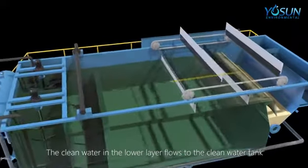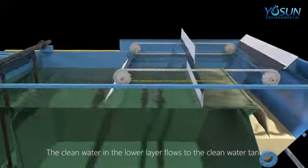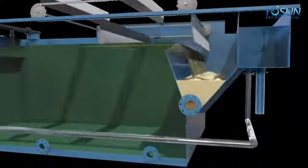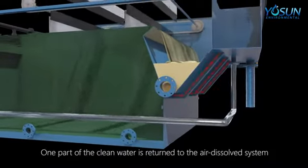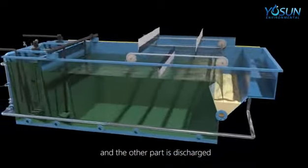The clean water in the lower layer flows to the clean water tank. One part of the clean water is returned to the air dissolved system and the other part is discharged.